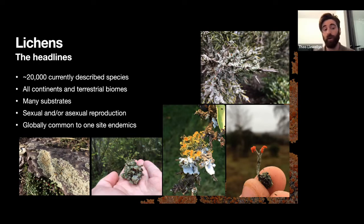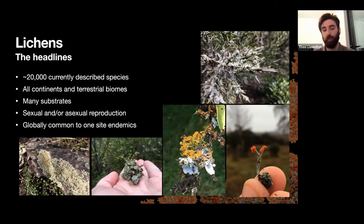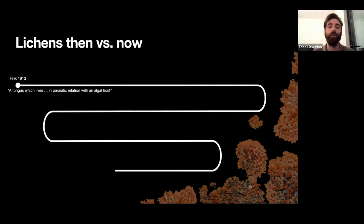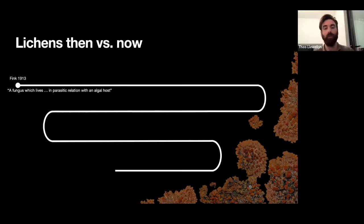Lichens have a whole range of ecologies and distributions. There are species that are globally common, found all over the world, and then some species that have only been identified on one individual tree in one locality. So they can range from being very rare to extremely common. How do we define a lichen? The textbook definition is a symbiosis between a fungus and an algae, but there has been quite a lot of debate and change in this definition over time.